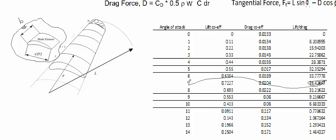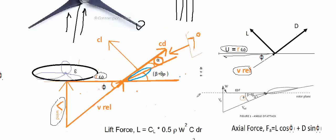Now imagine there is wind flowing. For a wind turbine blade element, the actual wind it experiences is the relative wind velocity — this is the velocity that will be experienced by the blade element.